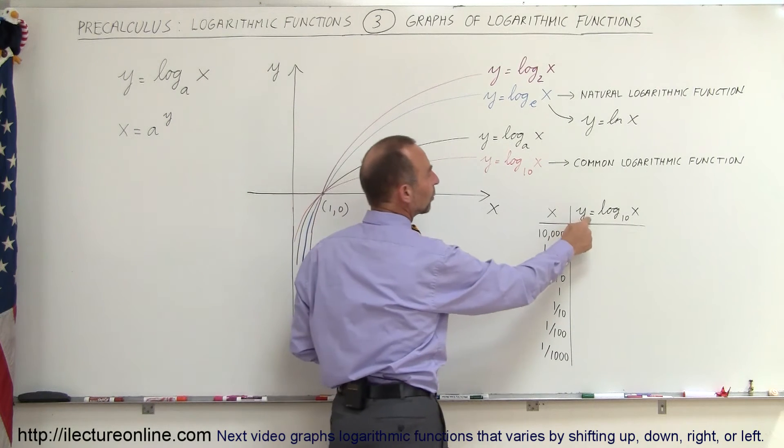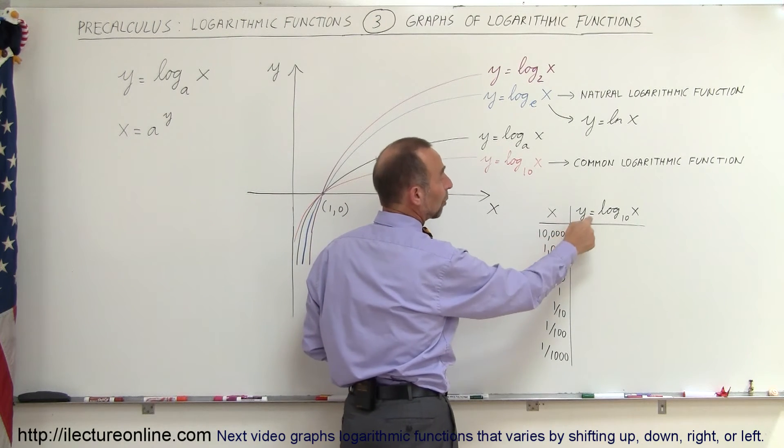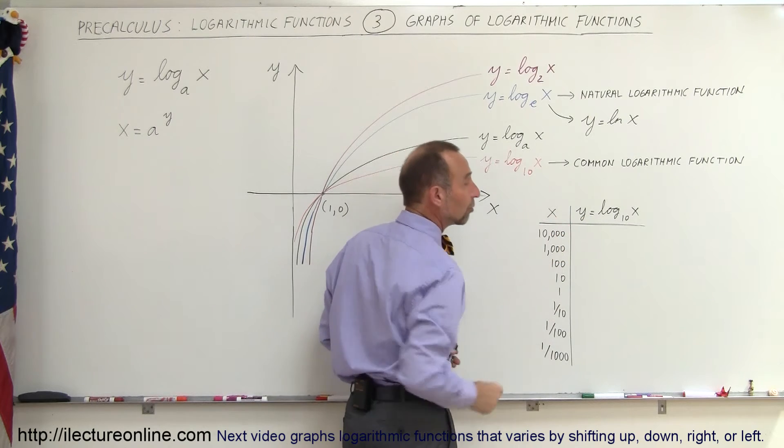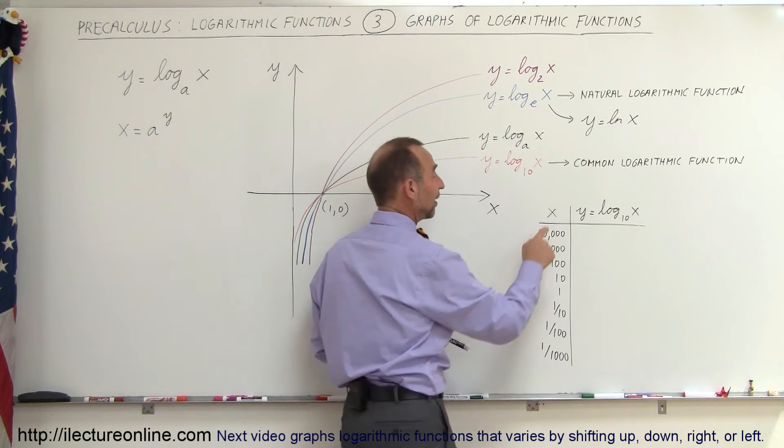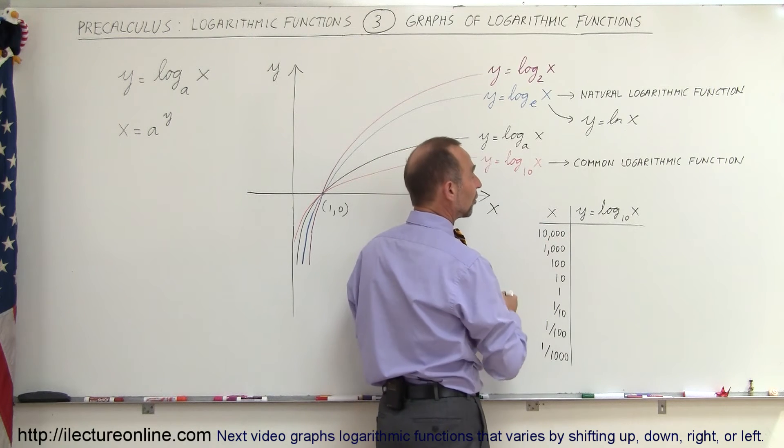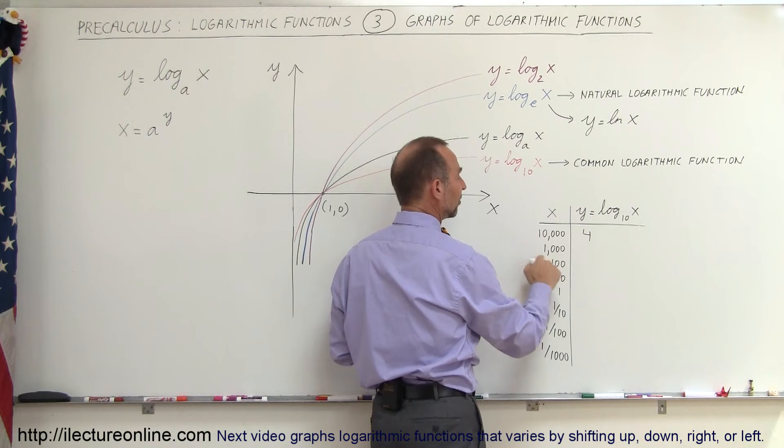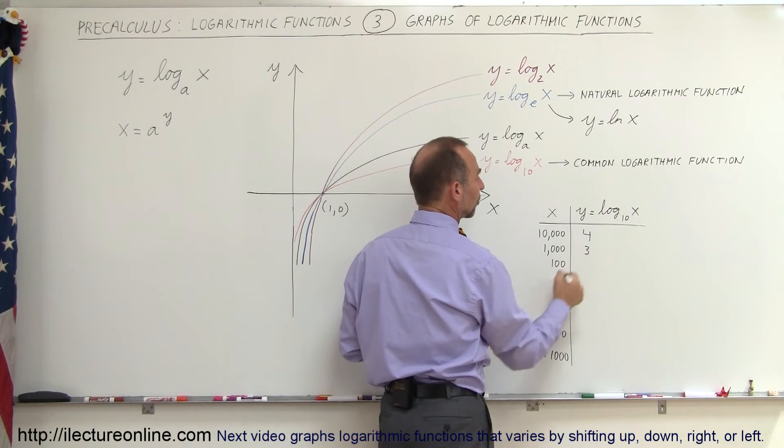For example, what would y be equal to when x is 10,000? What would y be equal to when x is 1,000? And so forth. And notice, all you have to do is count the number zeros. If x is equal to 10,000, there's four zeros. That means y is equal to 4. If x is equal to 1,000, y is equal to 3.